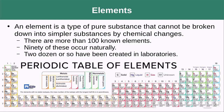An element is a type of pure substance that cannot be broken down into simpler substances by chemical changes. There are more than 100 known elements — 90 of these occur naturally and about two dozen have been created in laboratories. They're all contained within the periodic table, which is a table of all the elements discovered so far.